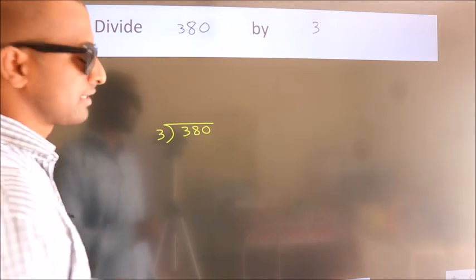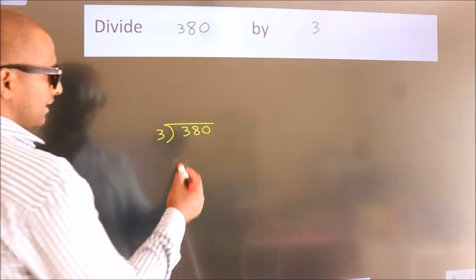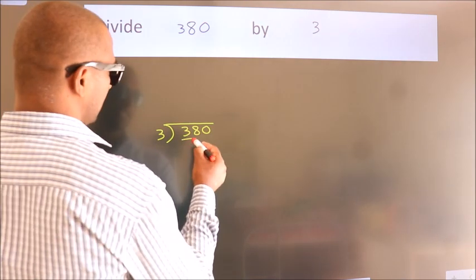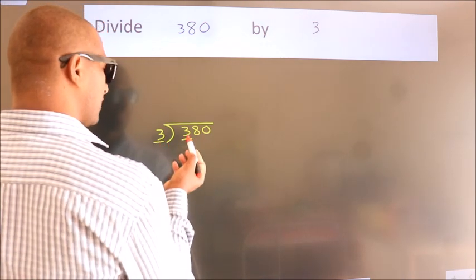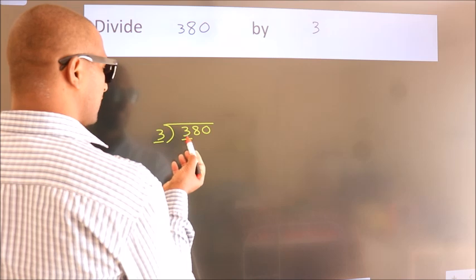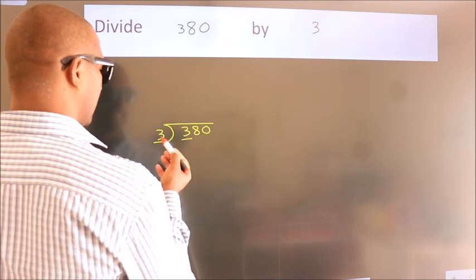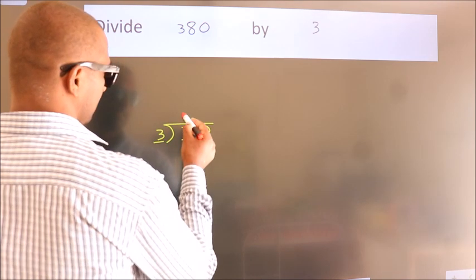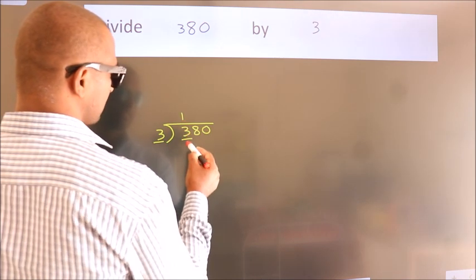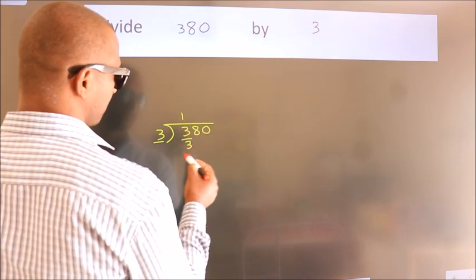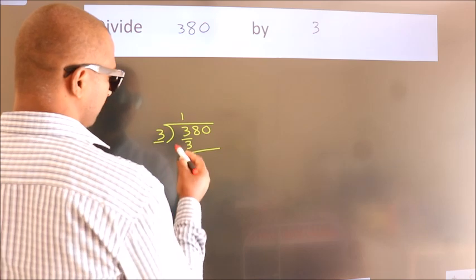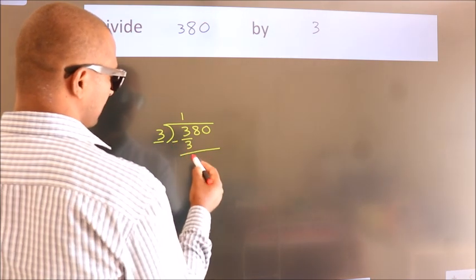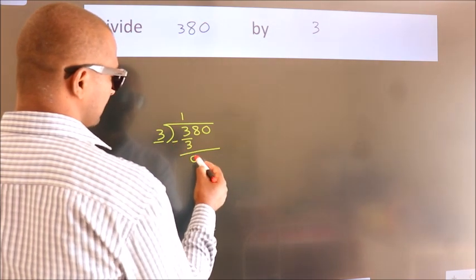Here we have 3. When do we get 3? In the 3 table, 3 once is 3. Now we should subtract. We get 0.